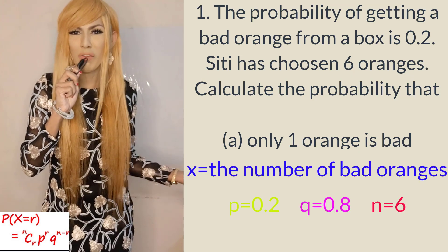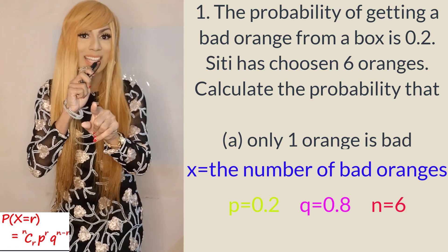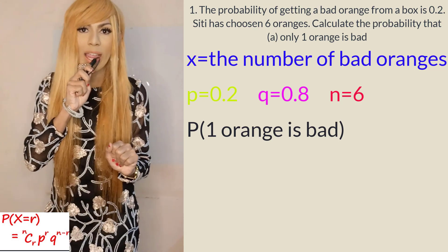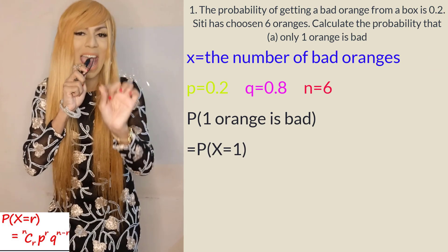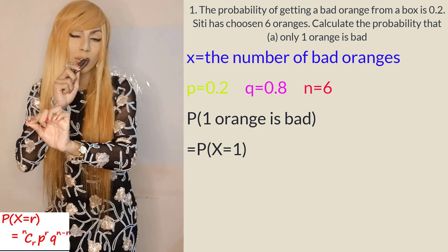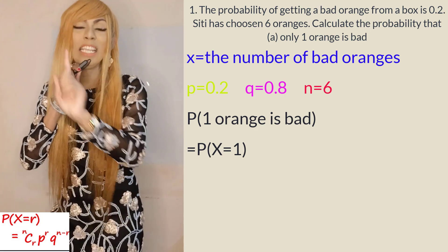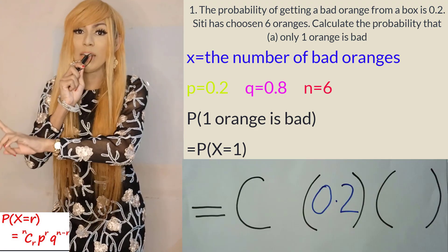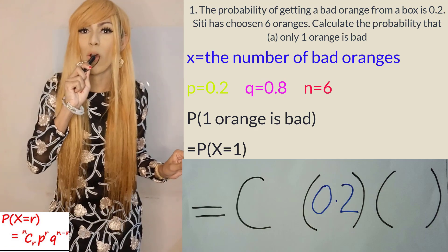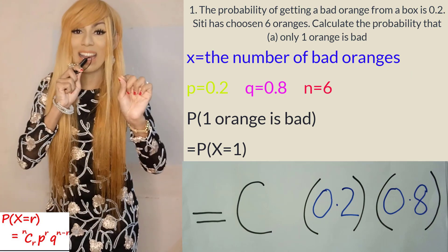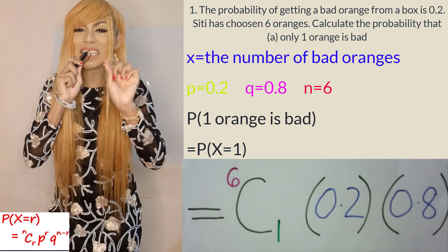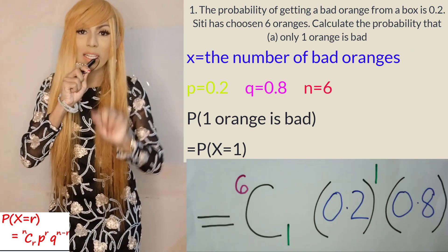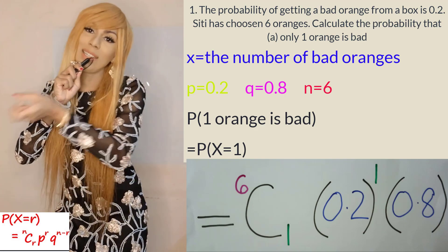Now we can apply the formula. What you write in your exam is: P(only 1 orange is bad), which equals P(X = 1). Then write C( )( ) — in the first bracket put P = 0.2, in the second bracket put Q = 0.8. Out of 6 oranges, 1 is bad, so it's 6C1. The power of the first bracket is 1, and the power of the second bracket is 6 minus 1 = 5.